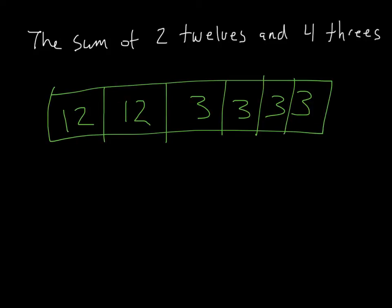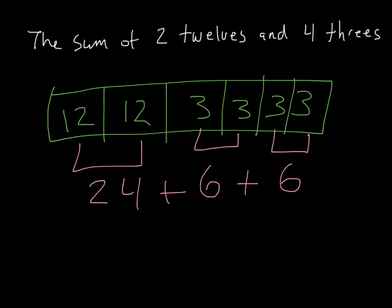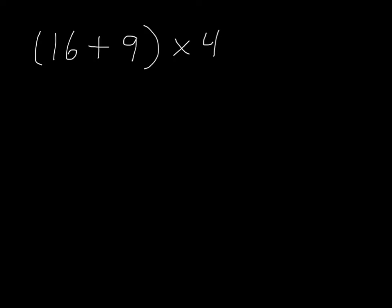Two twelves and four threes. When I add this, I like to do it piece by piece. So two twelves, I know, is 24. We can do two threes is 6. Two threes is 6. And remember, we're adding all these together. Twenty-four plus six is thirty. Twenty-four plus six is thirty-six. I've now broken it into multiple pieces, and I've used a model to show my work.